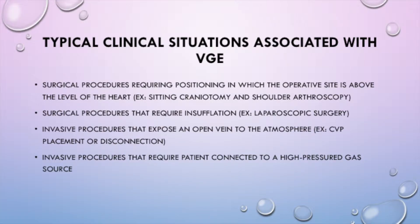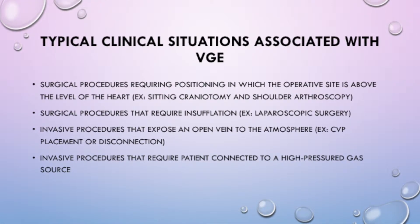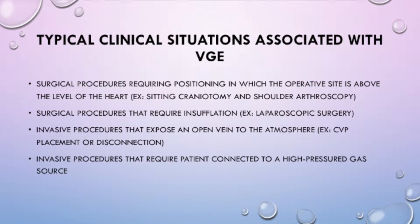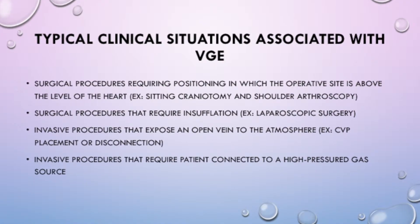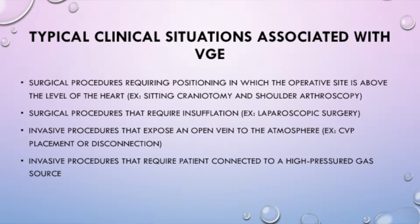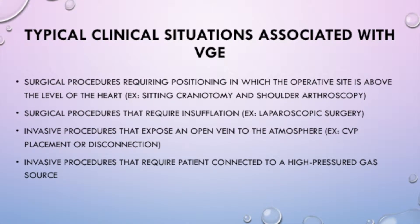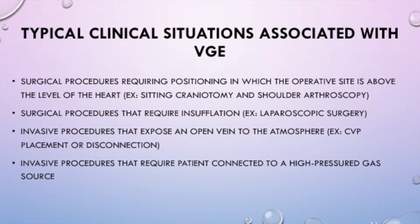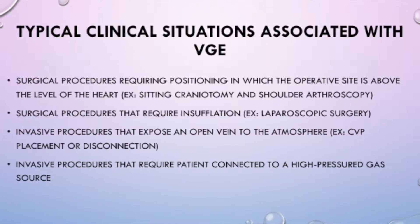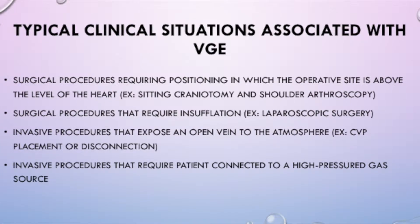It is important for the nurse anesthetist to recognize the clinical situations that can predispose a patient to developing a VGE. Surgical procedures requiring positioning in which the operative site is above the level of the heart, such as a sitting craniotomy and shoulder arthroscopy. Surgical procedures that require insufflation, such as laparoscopic surgery. Invasive procedures that expose an open vein to the atmosphere, such as CVP placement or disconnection. And invasive procedures that require the patient to be connected to a high pressurized gas source.